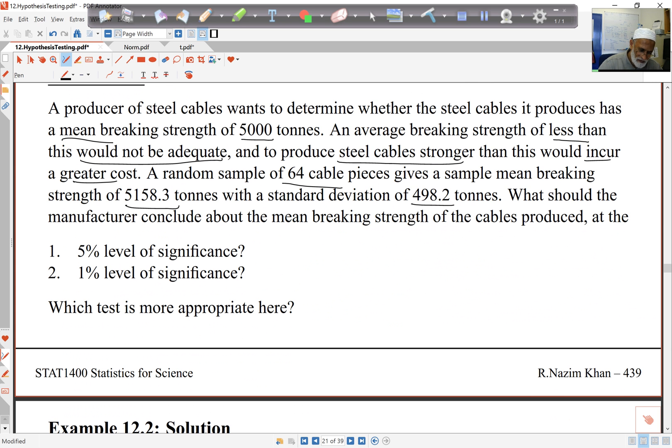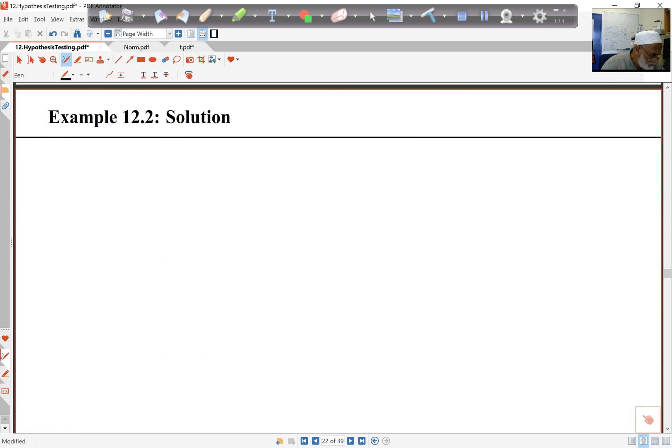Let's define our variable first. Let μ equal the mean breaking strength of the cables. My hypothesis is going to be H₀: μ = 5,000, which is what I'm aiming at. And H₁ here is, I don't want to be too strong or too weak. So this is going to be μ ≠ 5,000. Either too strong or too weak isn't good enough for me. So this is a two-sided test.